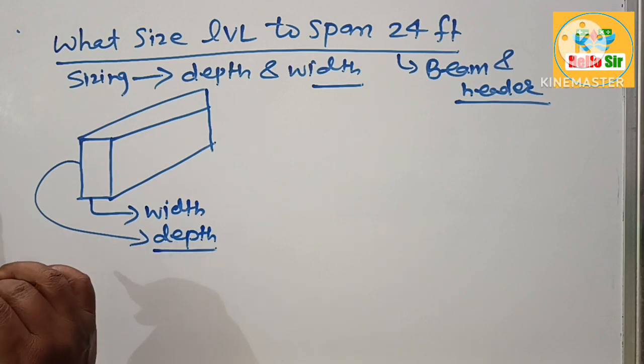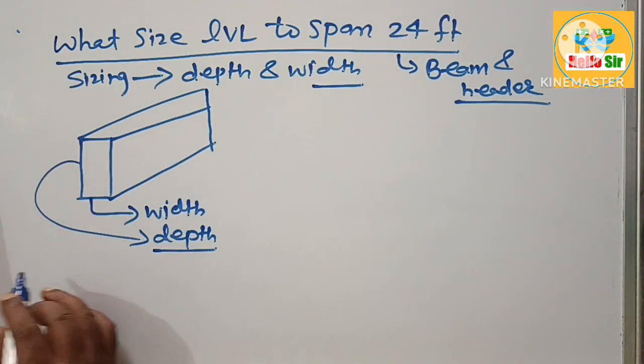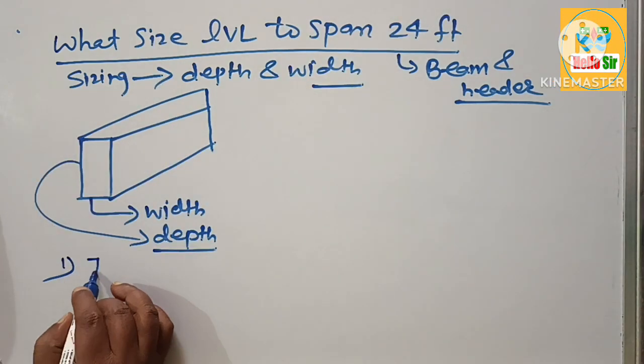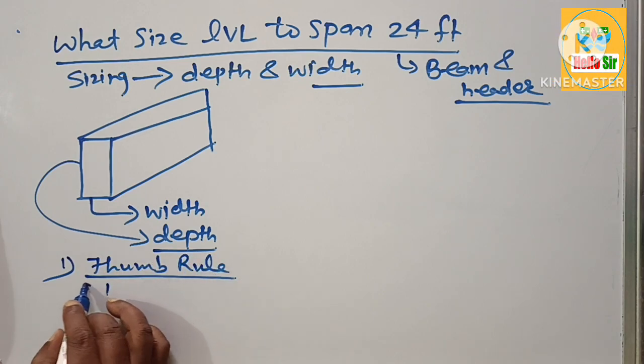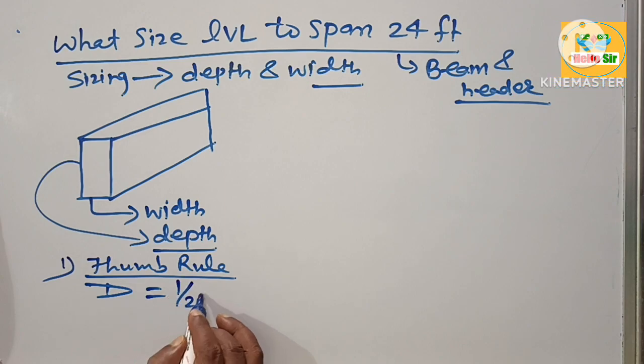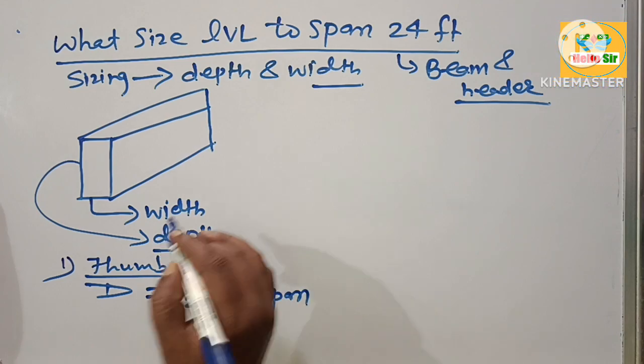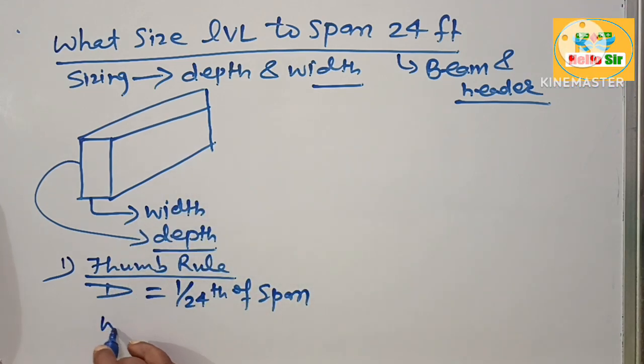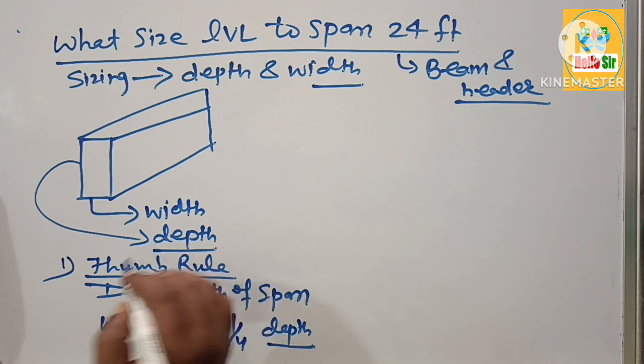You have to find out according to thumb rule. As per thumb rule, depth of the LVL beam is about 1/24th of the span in inches. And the width is about one third or one fourth of the depth of the LVL beam.